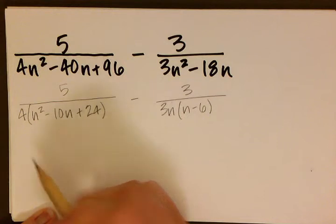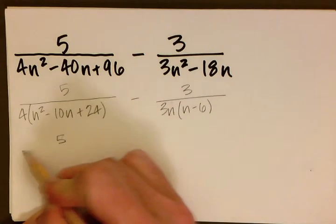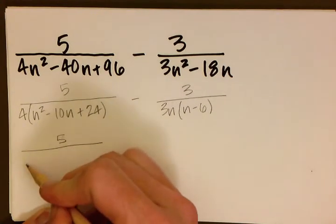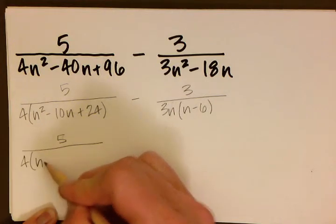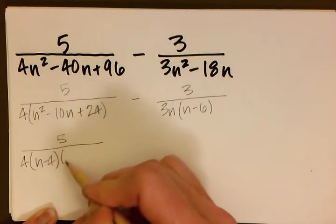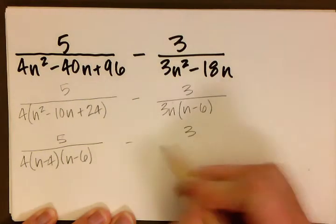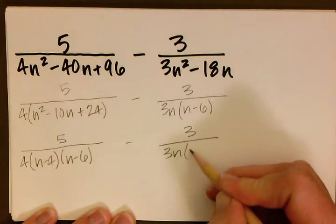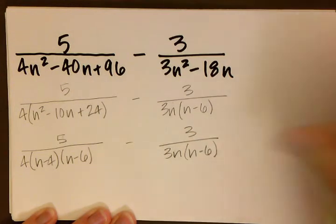The next thing we want to do, it looks like we need to factor our first denominator one more time. So let's keep our numerator at 5. Our denominator then becomes 4 times n minus 4 and n minus 6. And our second fraction stays the same with 3 over 3n times n minus 6.